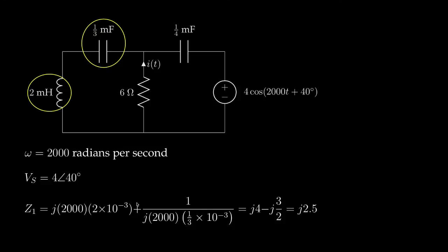We can then sum those two impedances to obtain a single equivalent impedance for the two elements in series. So that would be J times 4 minus, if we put the J in the numerator, minus J times 3 halves. If we work that math out, we'll get J times 2.5, and that's the equivalent impedance for these two elements in series.